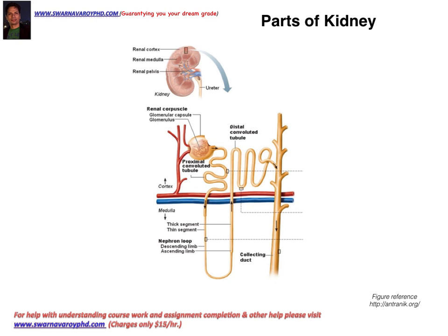You can see there is the outer, lighter strip — the outer area, which is called the renal cortex — and then you have the inner, darker medulla. Below you can see the picture of a nephron. Most of the nephron is in the cortex, but the Henle's loop, or the loop of Henle, is present in the medulla. You can see how the Henle's loop dips into the medulla and goes back to the cortex. That red box shows the loop of Henle dipping into the medulla, and then the distal convoluted tubule is back in the cortex.